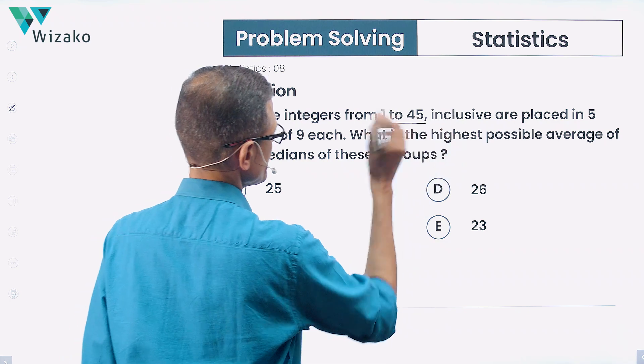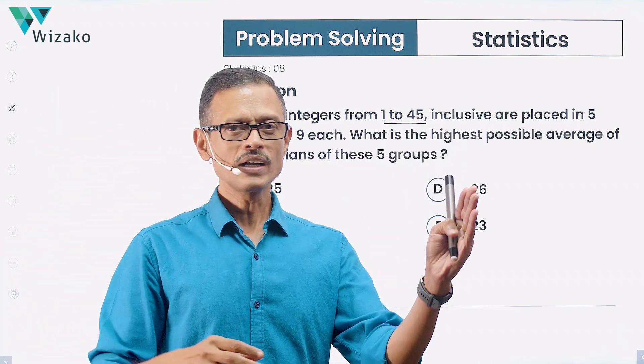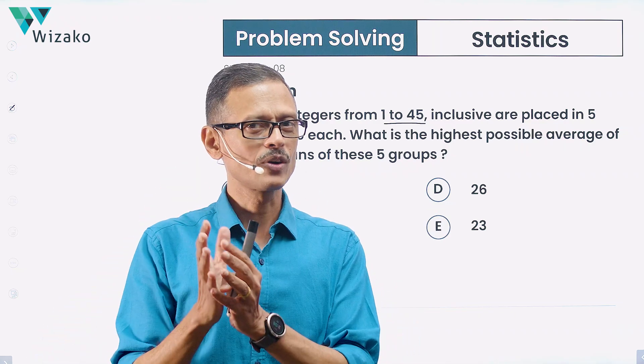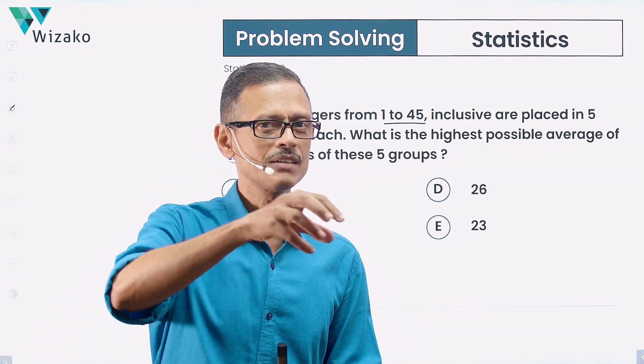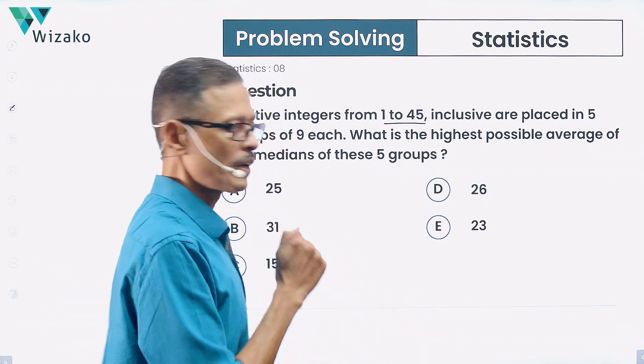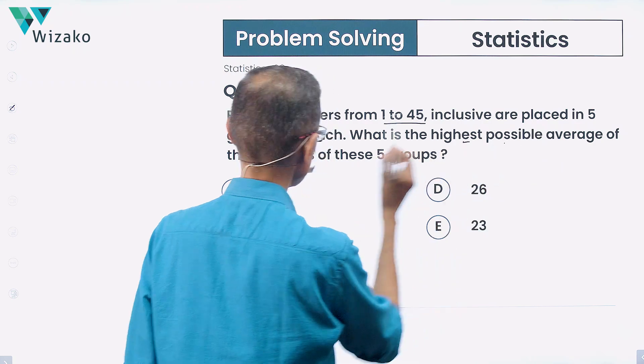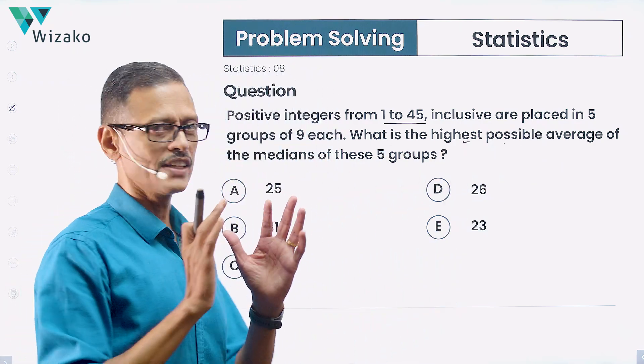Positive integers from 1 to 45, inclusive, are placed in 5 groups of 9 each. So from 1 all the way up to 45, we have 45 positive integers. We are breaking them into 5 groups, each group containing 9 integers. What do we have to find out? What is the highest possible average of the medians of these 5 groups?